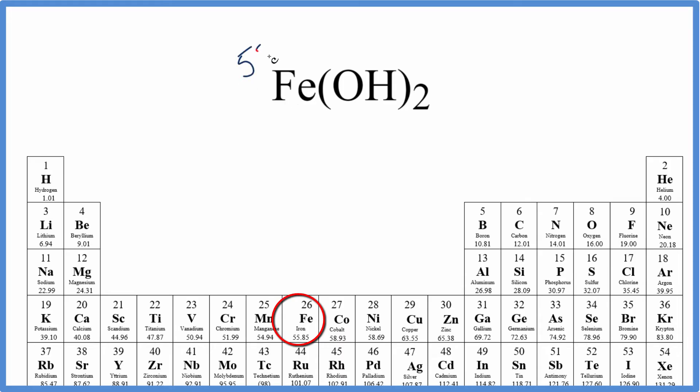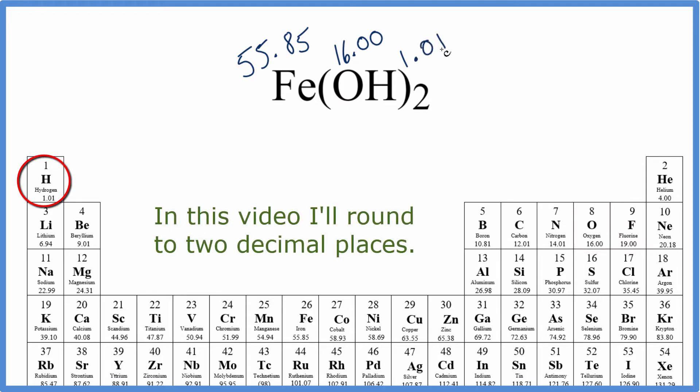Iron is 55.85 grams per mole. Oxygen is 16.00 grams per mole, and hydrogen is 1.01 grams per mole.